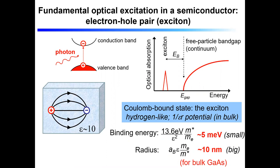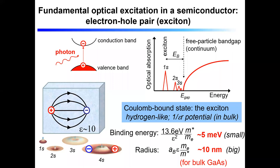In conventional bulk semiconductors like gallium arsenide, binding energies are pretty small — only a couple of milli-electron-volts, about 5 meV for GaAs — and the physical size of the bound electron-hole pair is about 10 nanometers. In very clean material, not only can this electron-hole pair bind in a ground state, but in analogy with hydrogen you can also have excited states — a 2s, 3s, 4s — a Rydberg ladder of exciton states. These Rydberg states live below the gap and sometimes appear as discrete peaks in very clean material, terminating at the free particle gap.